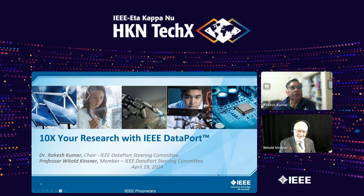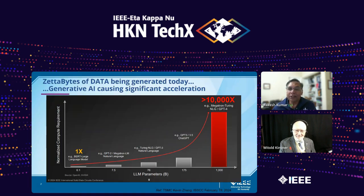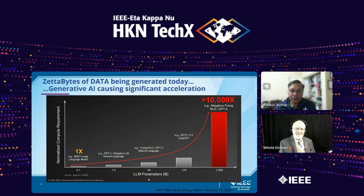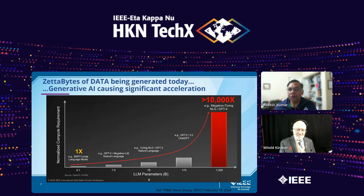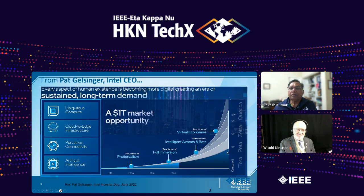We've all heard of ChatGPT and all the talk about how it gives you answers — good, bad, ugly. What's happening is that it's creating a lot of data and also requiring a lot of compute horsepower. This chart is from TSMC, the leading foundry in the world. Kevin Zhang, their senior vice president, presented at one of our conferences. Another chart from Pat Gelsinger, the CEO of Intel — though about two years old — both show the escalation in data that's becoming available.